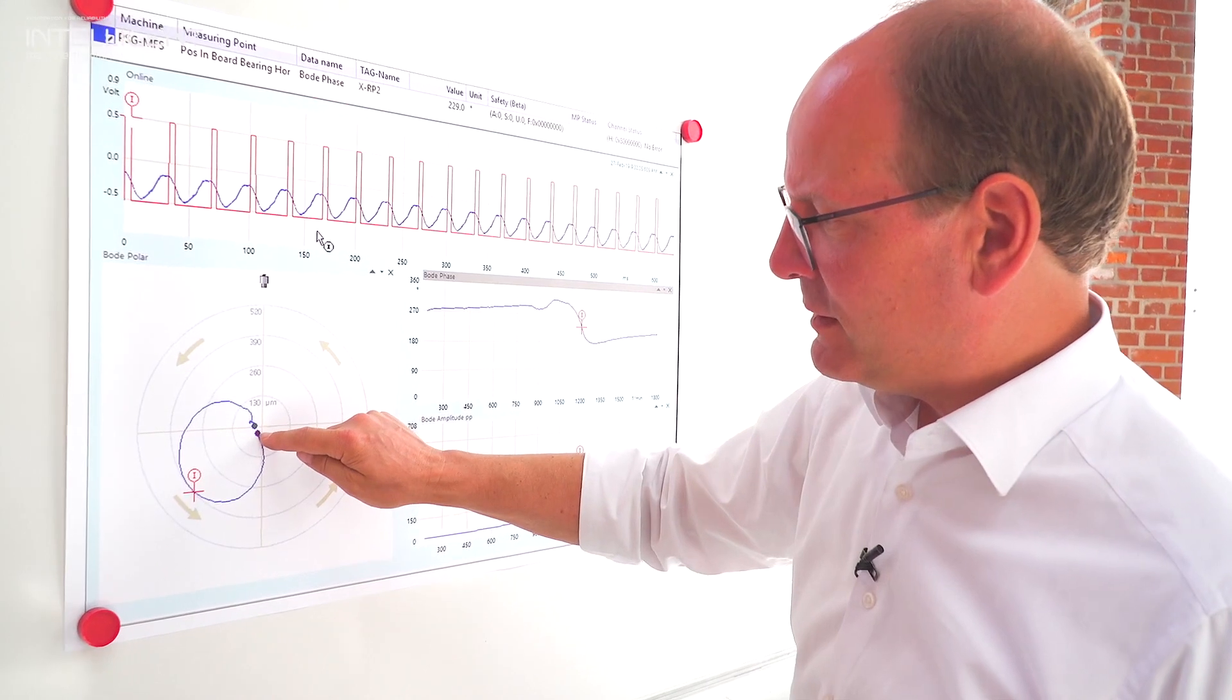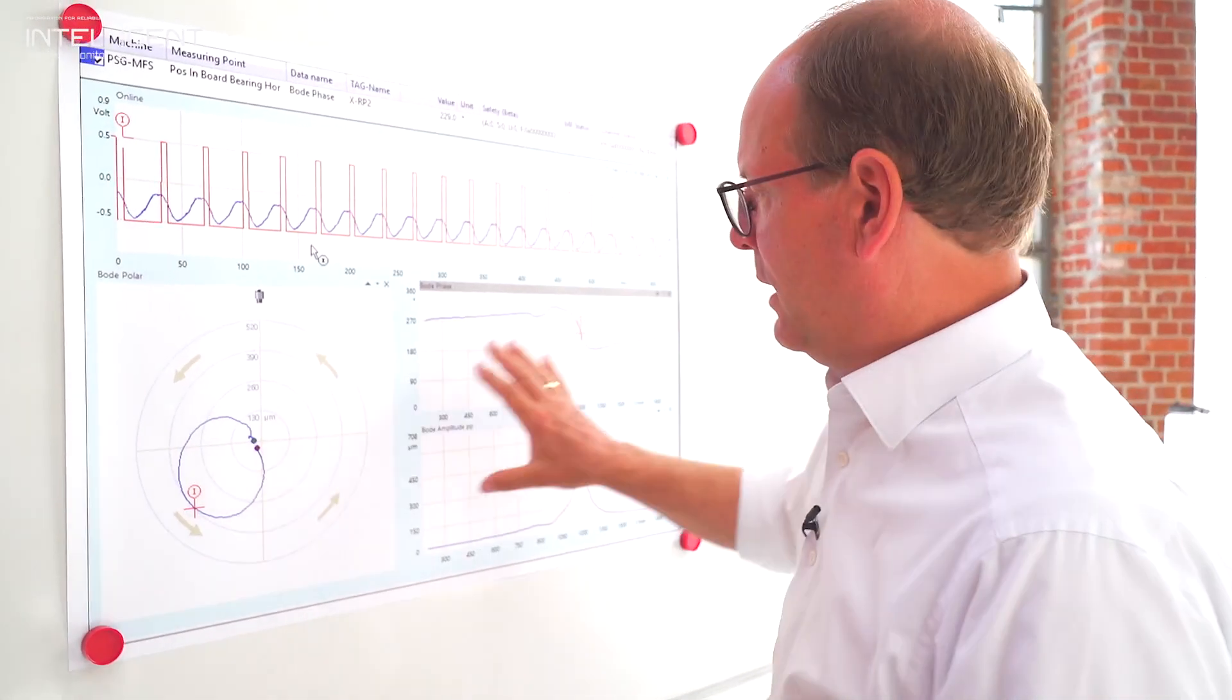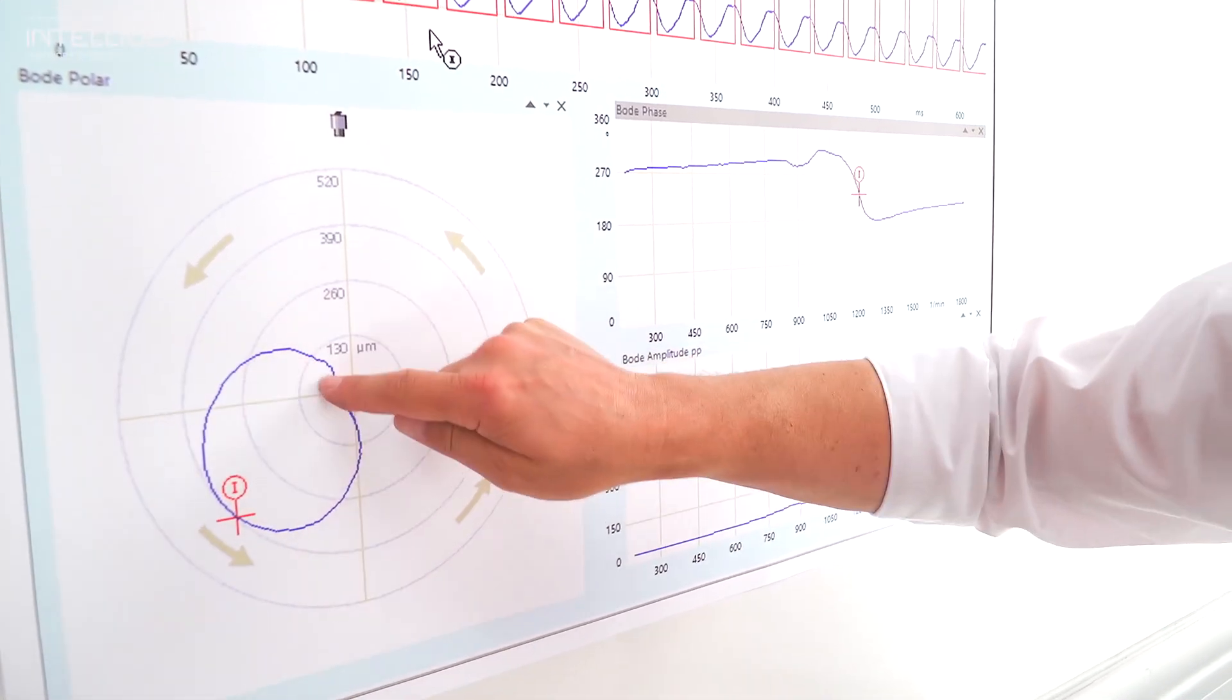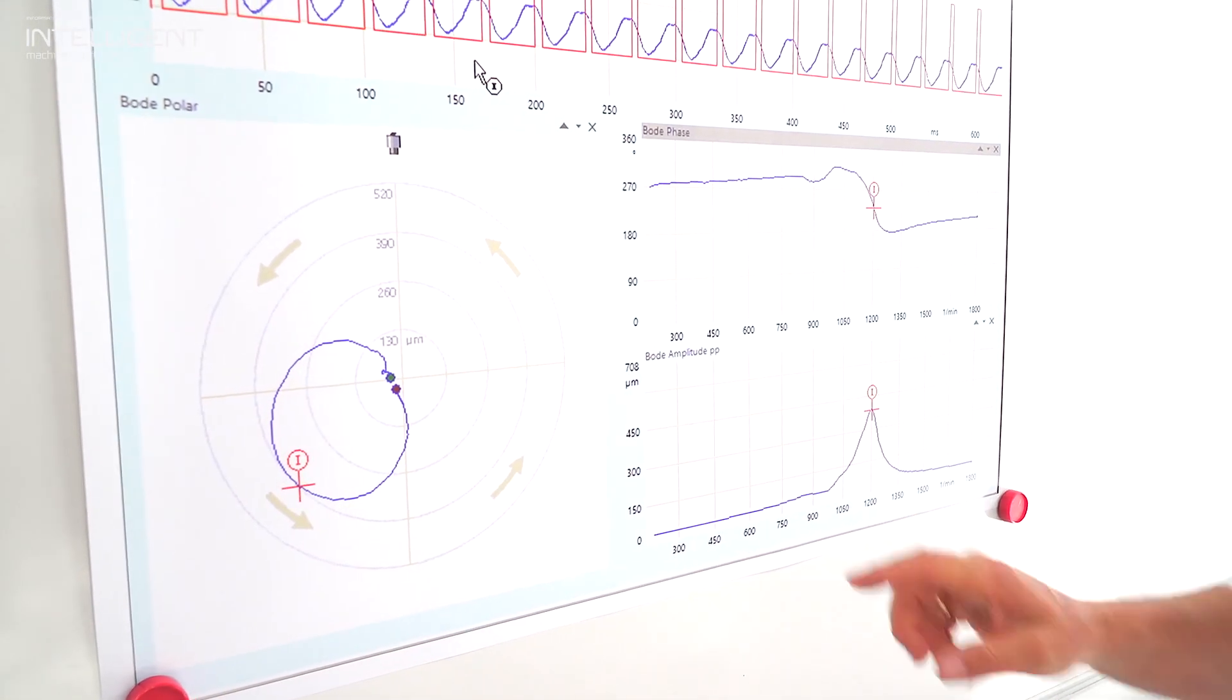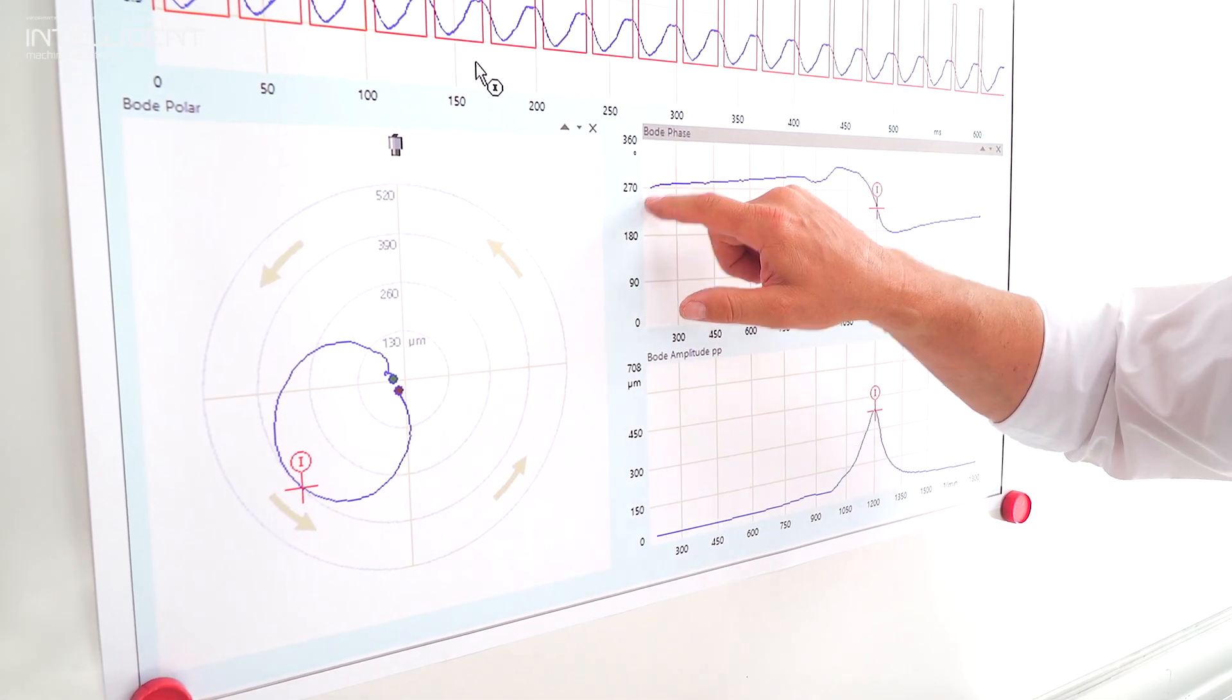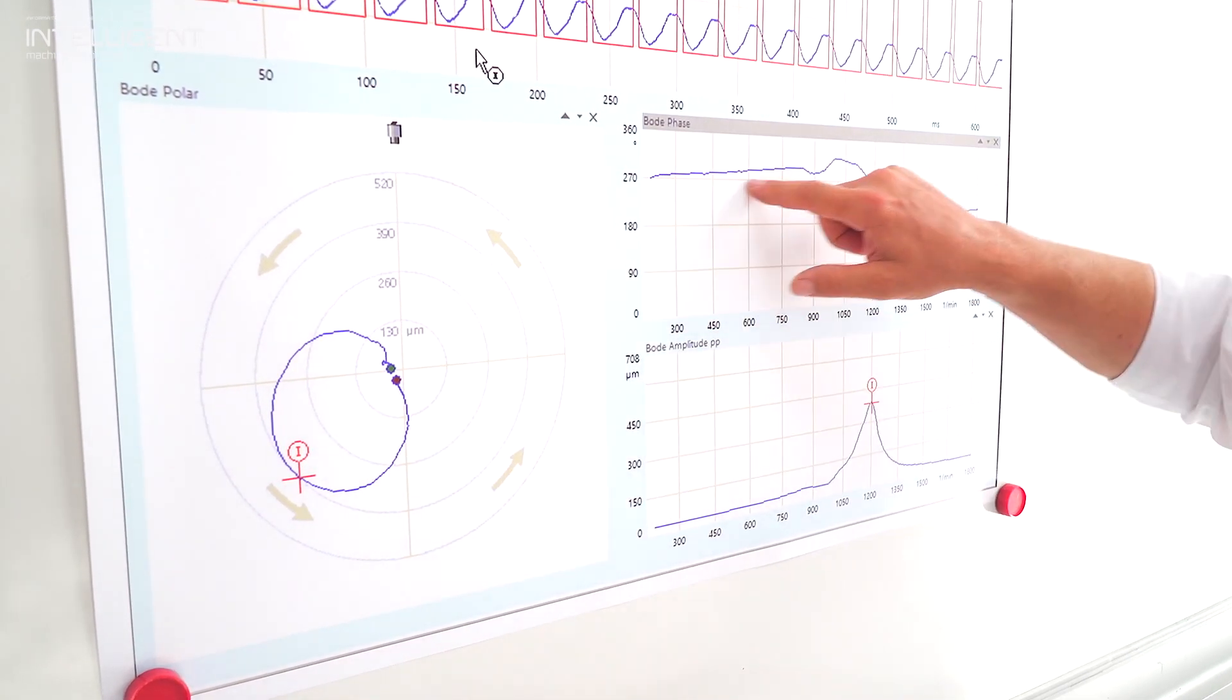This is the starting point when the machine starts. By using these two information we create the vectors. We see here all the different vectors creating a Bode Polar orbit. We see here also we are below 270 degree, and then after starting up the machine we are going over 270 degree.